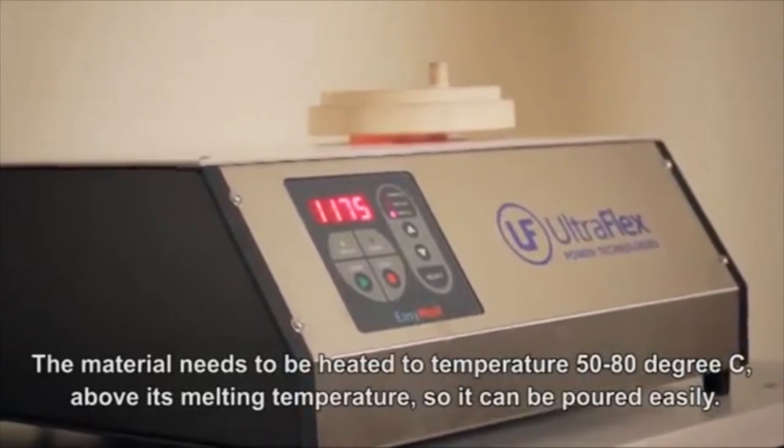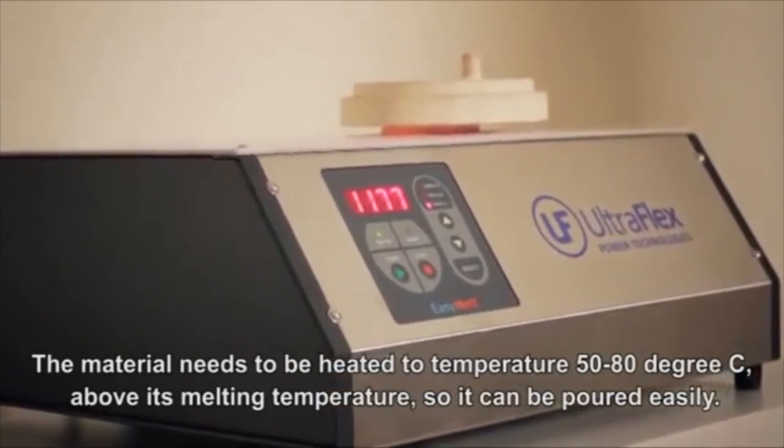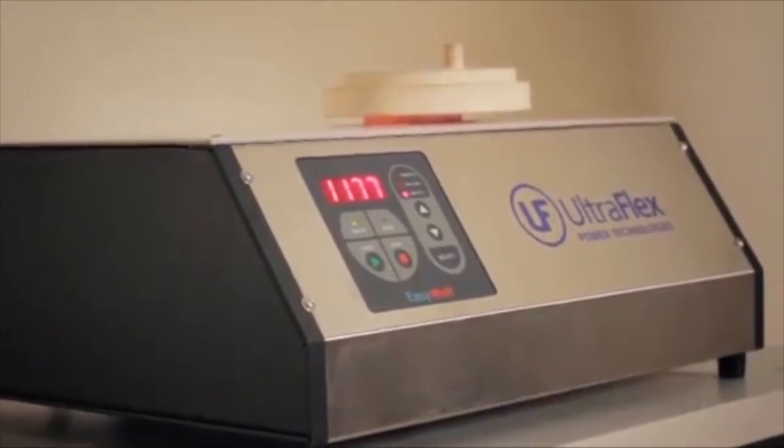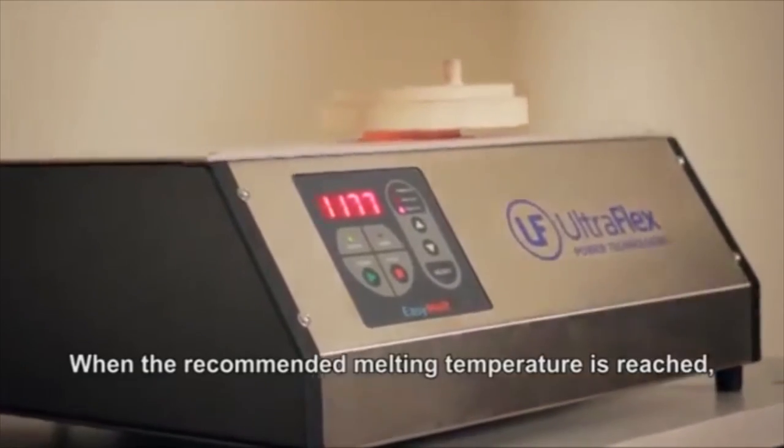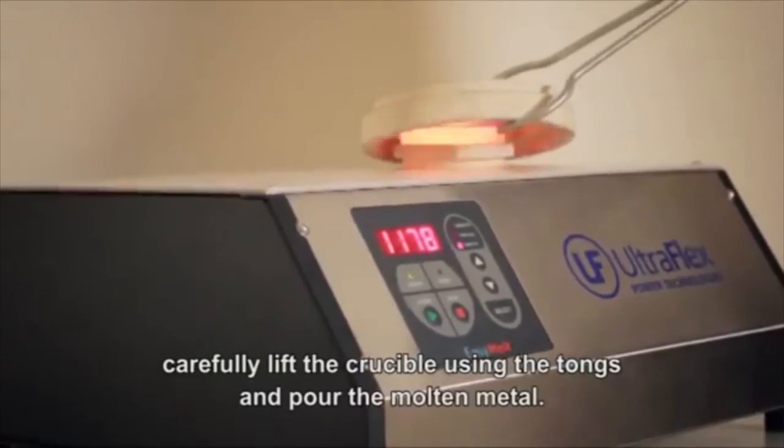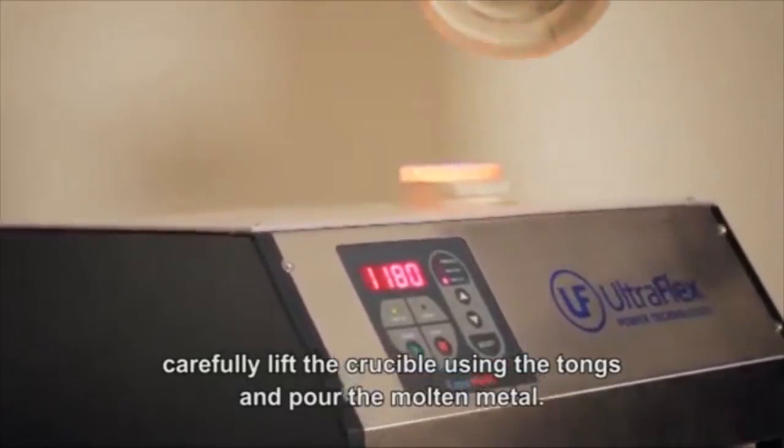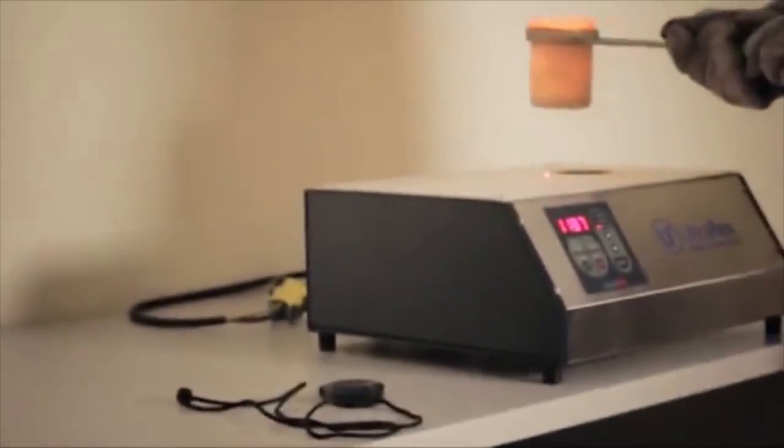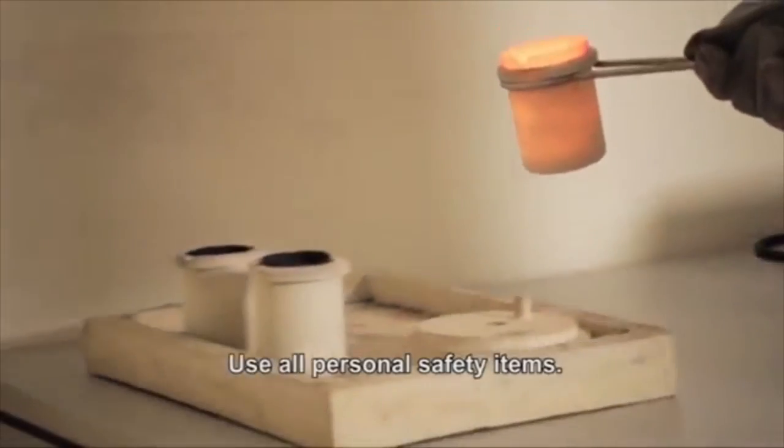The material needs to be heated to a temperature of 50 to 80 degrees Celsius above its melting temperature so it can be poured easily. When the recommended melting temperature is reached, carefully lift the crucible using tongs and pour the molten metal. Use all personal safety items.